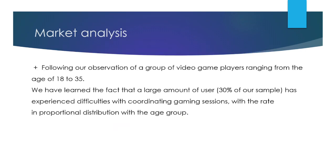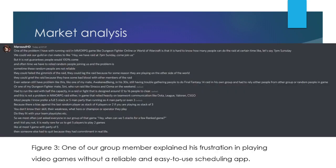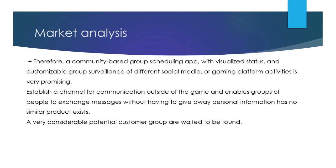For our market analysis, we followed an observation group of video game players ranging from age 13 and 18 to 35. We worked out that 30% of our sample has experienced difficulty coordinating gaming sessions, at a rate proportional to the age group distribution. This is a group member showing his frustration without a simple scheduling app — he just wishes there was a simple way to check and message instead of having to apologize for not realizing someone was busy. This proves there is a gap in this market that actually needs to be solved.